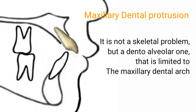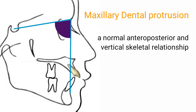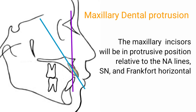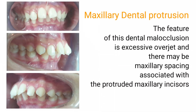The cephalometric shows a normal anterior-posterior and vertical skeletal relationship characterized by a normal ANB, SNA, and SNB angle. The maxillary incisors will be in a protrusive position relative to the NA line and the Frankfurt horizontal. The feature of this dental malocclusion is excessive overjet, and there may be maxillary spacing associated with the protrusive maxillary incisors.